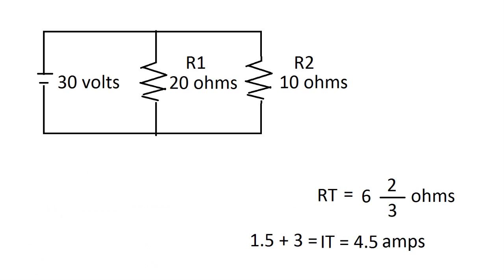Now to check our work, let's just add those two together. So we have 1.5 plus 3. And that equals 4.5 amps, which we got for the I total.